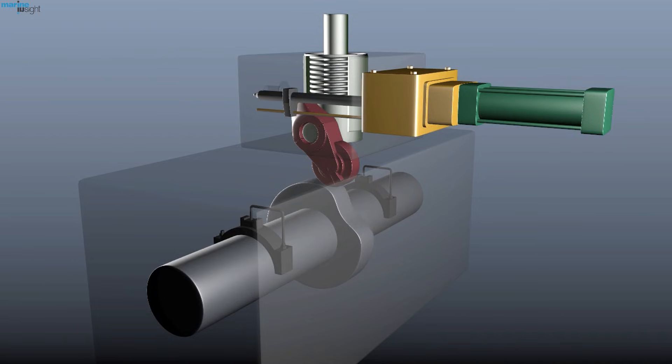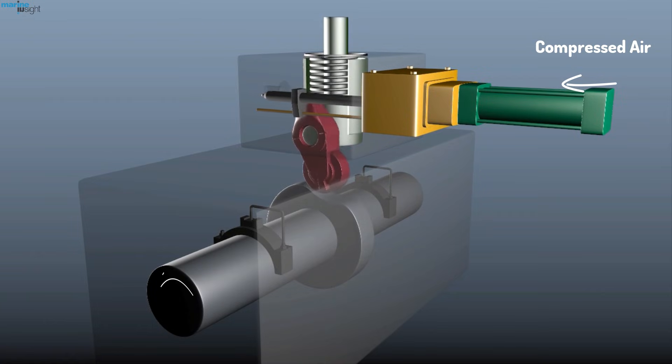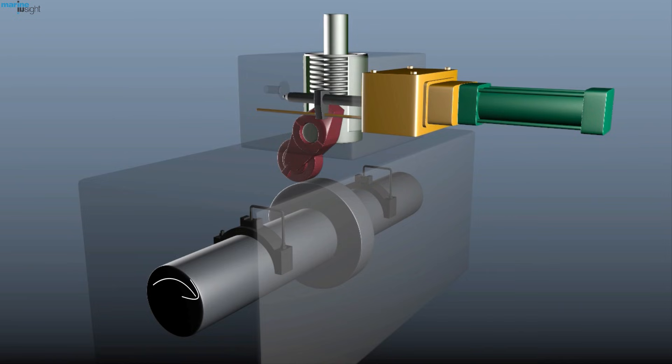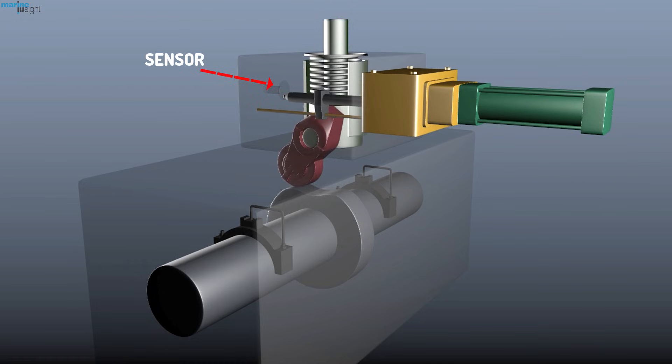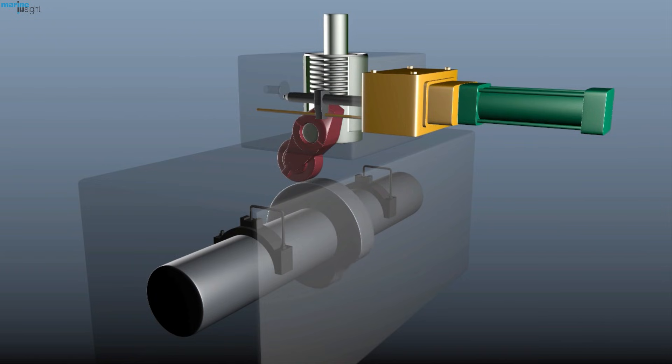When the reverse or astern command is given, compressed air from the starting system actuates the pneumatic cylinder and piston, which displaces each follower unit. If the position is not properly locked in place, fuel delivery will be stopped. This is done by a sensor fitted to each pump. Once the engine is reversed and the cam follower is shifted, the timing when injection happens will change.